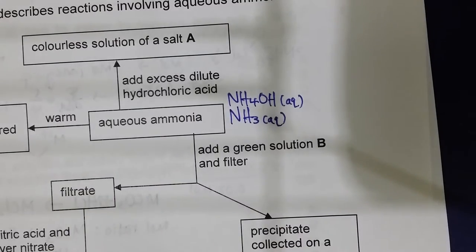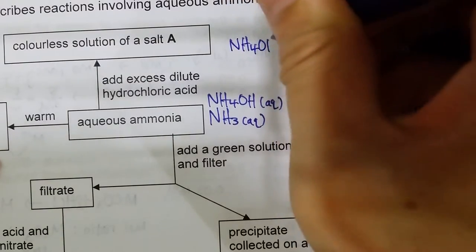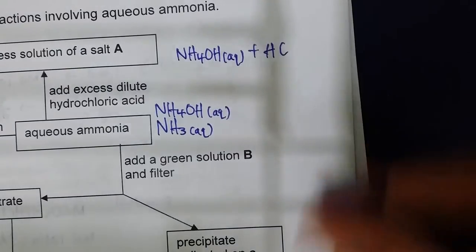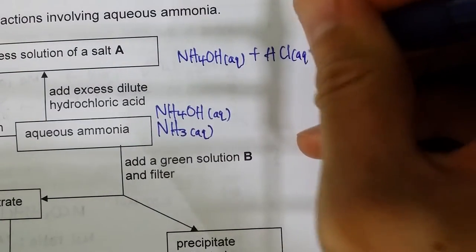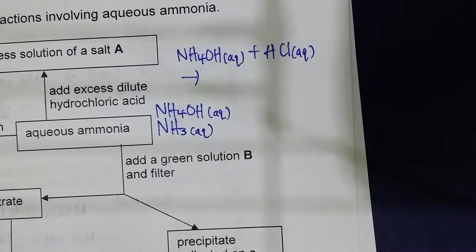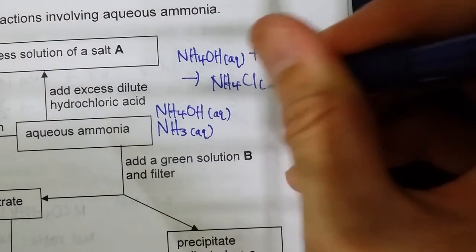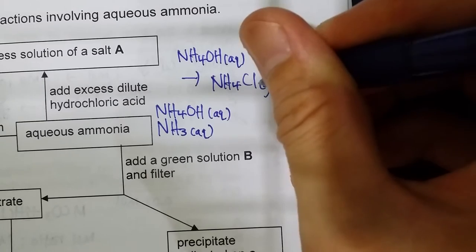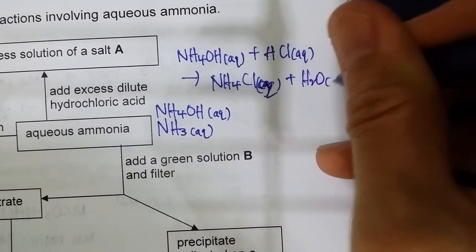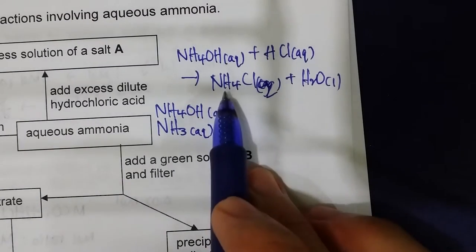Adding dilute hydrochloric acid to aqueous ammonia: NH₄OH(aq) + HCl(aq) → NH₄Cl(aq) + H₂O(l). This is an alkali reacting with acid to give salt and water. The colorless solution of salt A is ammonium chloride.